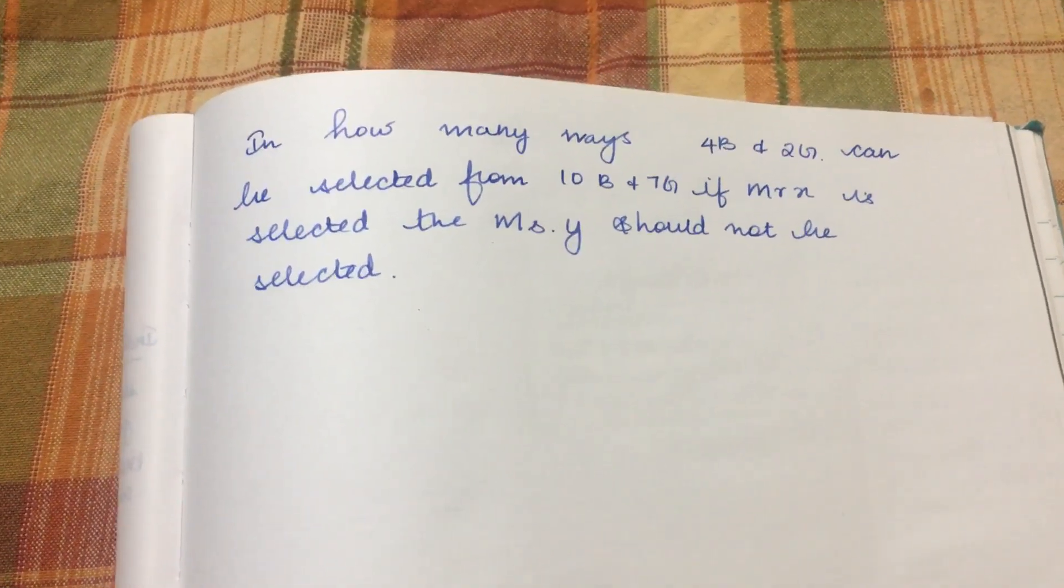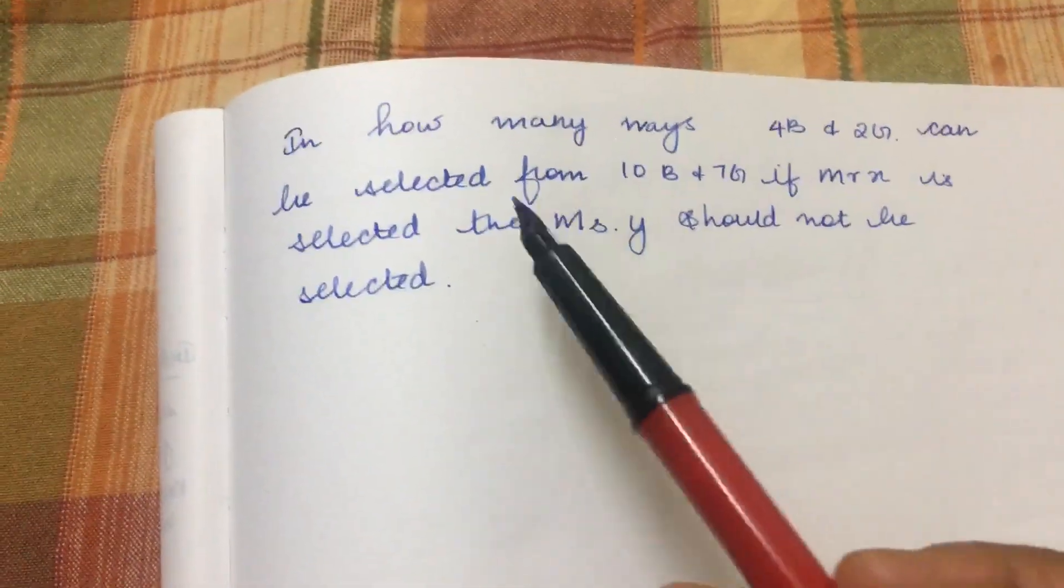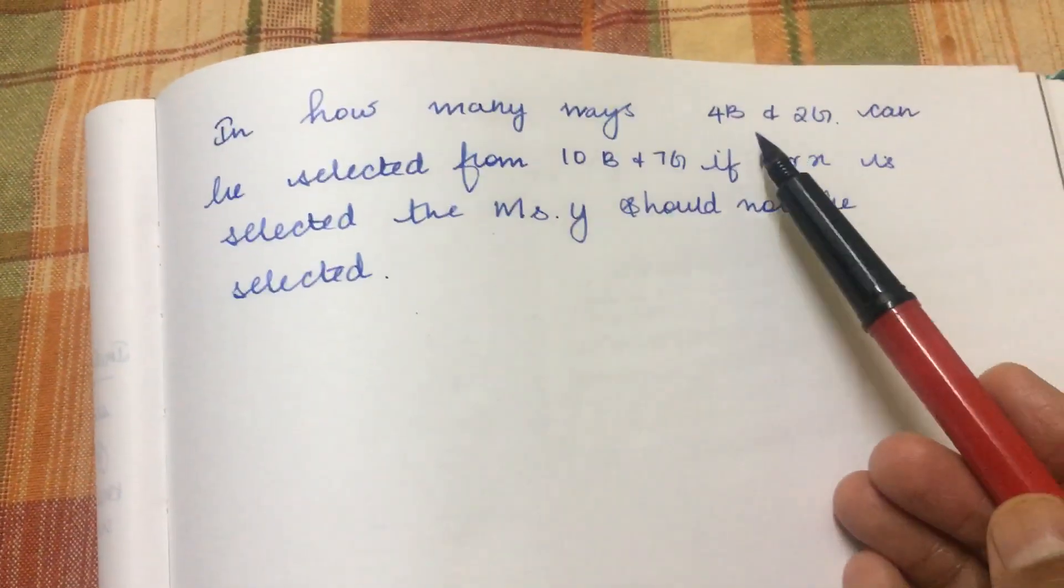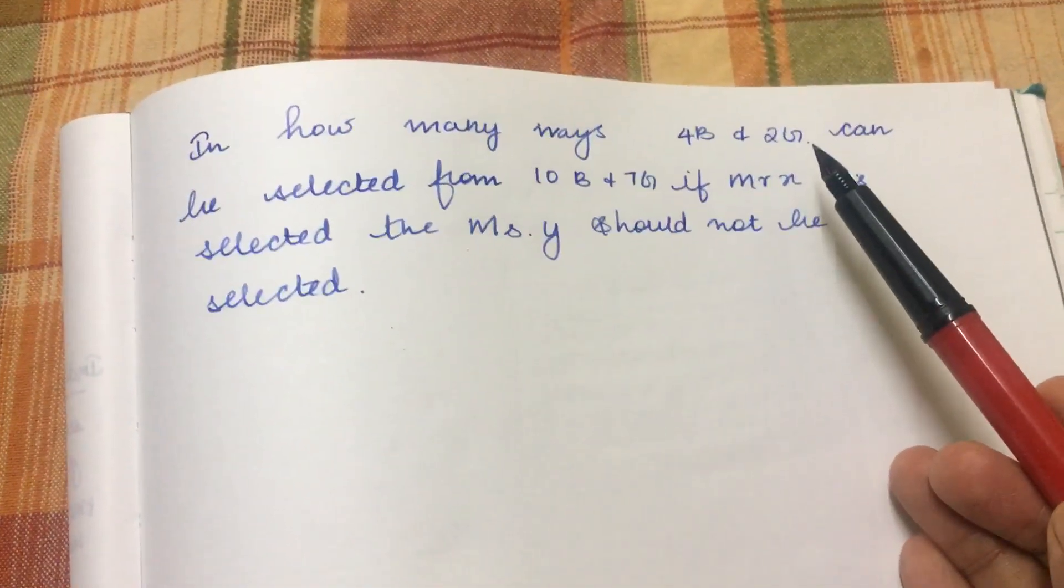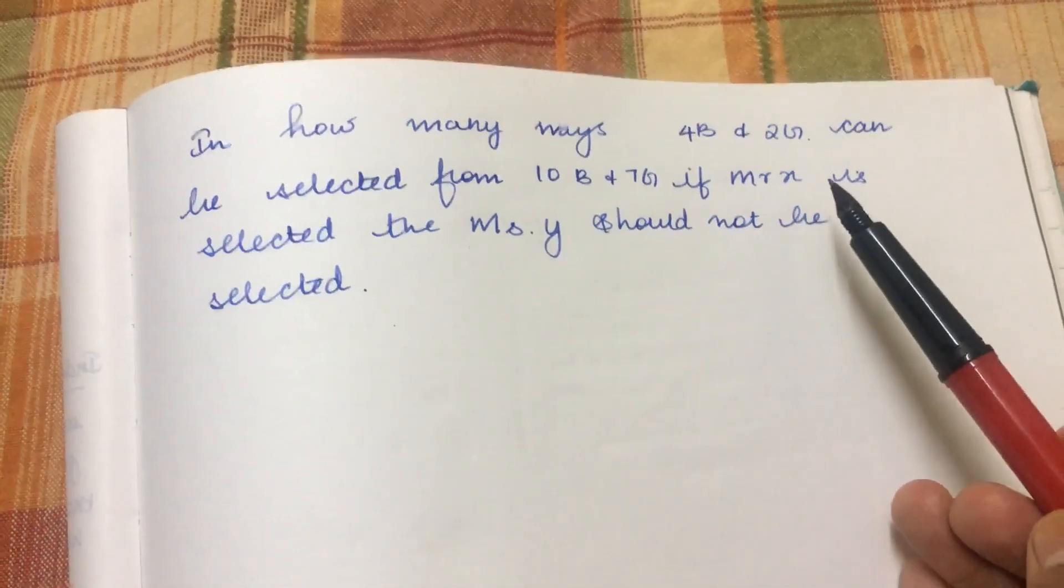X is selected then Miss Y should not be selected. So the basic condition is: 4 boys to be selected from 10 boys and 2 girls to be selected from 7 girls, but Mr. X and Miss Y cannot both be selected.